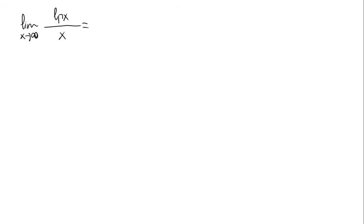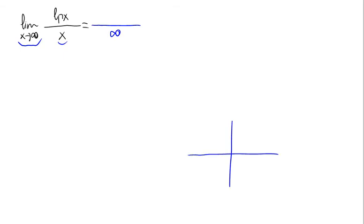We have that x approaches to infinity, so the denominator approaches to infinity. And if we draw the graph of the natural logarithm, we have that when x approaches to infinity, the natural logarithm approaches to infinity as well.